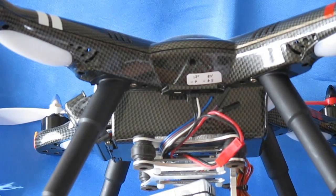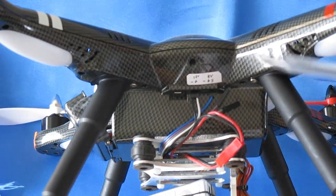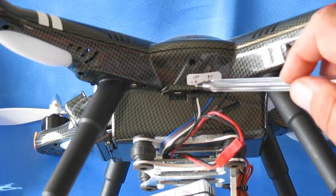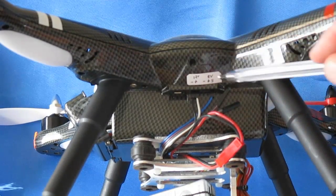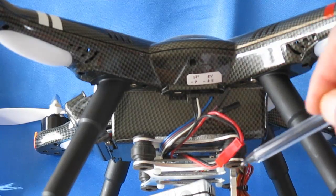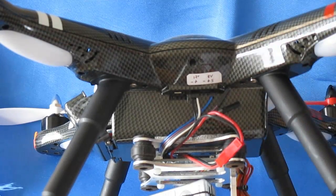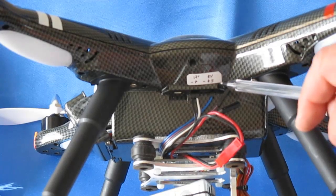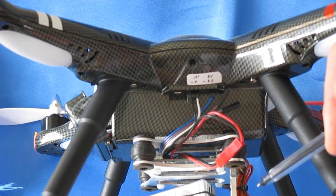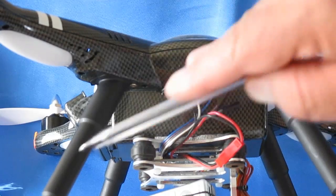So again, the only pins that we're going to worry about for hooking up to our gimbal system is the negative ground, which is all the way forward, the plus 12 volts to power the gimbal and to power the pitch primarily the pitch command, and the signal that tells the gimbal to move up and down, to pitch it up and down.